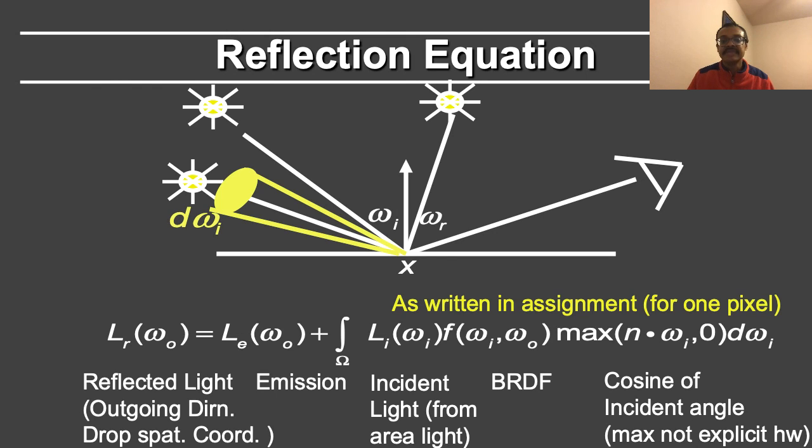Notice that this cosine is clamped to zero, so you get incident light only from the visible or upper hemisphere where the surface normal dot product with the incident direction is greater than zero. However, for simplicity in the assignment, in many cases we do not explicitly write the max operation shown here. You must still include the max in your practical implementation.